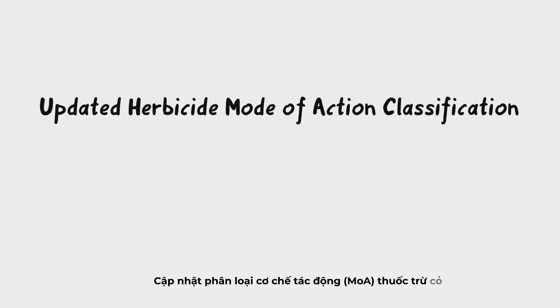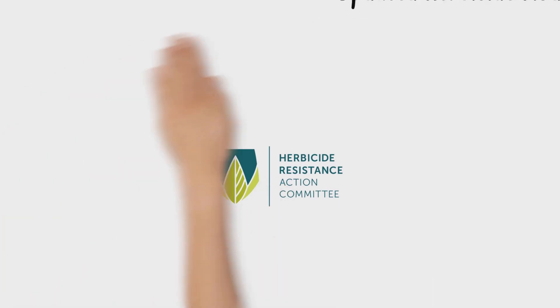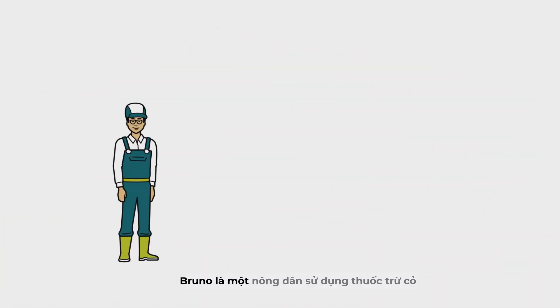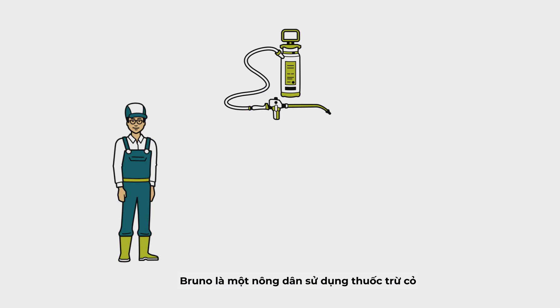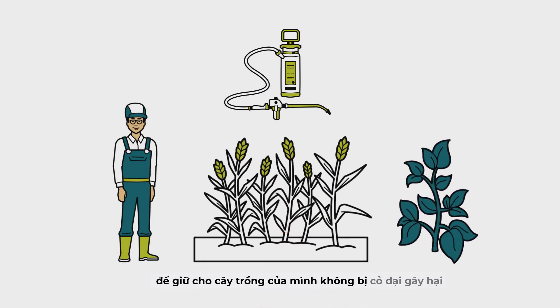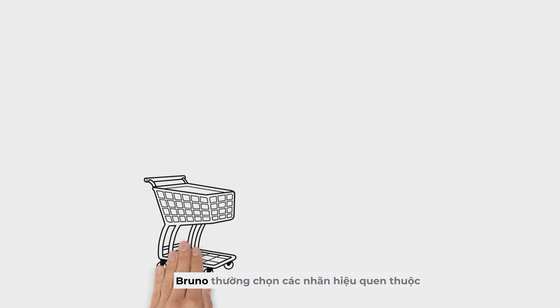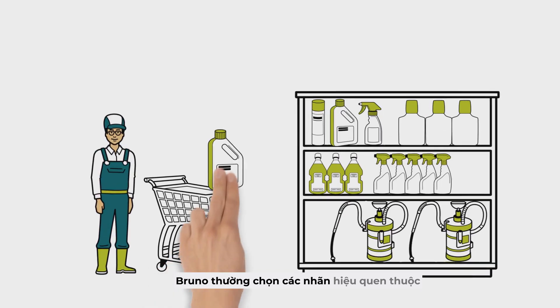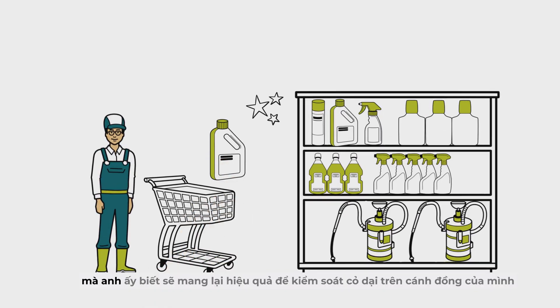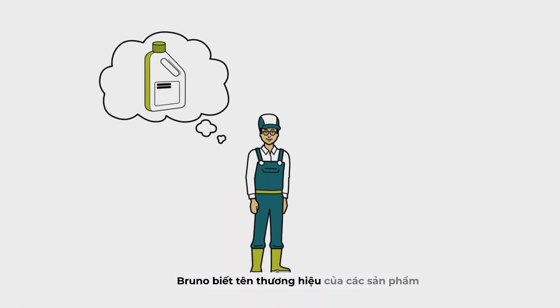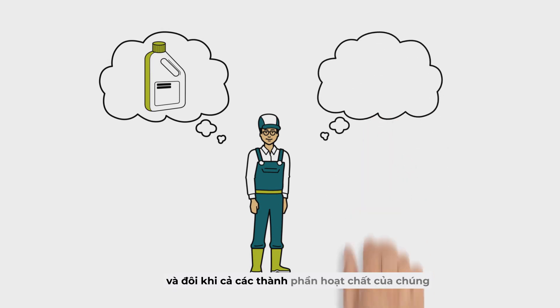The updated herbicide mode of action classification from A-TRAG. Bruno is a farmer who uses herbicides to keep his crops free from pesky weeds. When shopping, Bruno chooses his favourite herbicide brands that he knows work against the weeds in his fields. Bruno knows the brand names of his preferred products and sometimes also their chemical components.